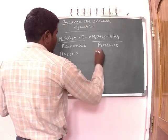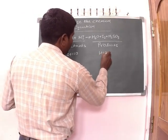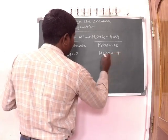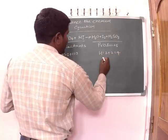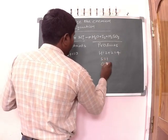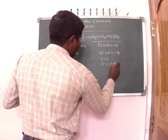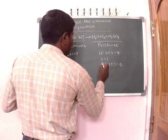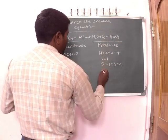And in the products side, the number of hydrogen atoms is 2 plus 2, that equals to 4. The number of sulfur atoms is 1. The number of oxygen atoms is 1 plus 3, that equals to 4. The number of iodine atoms is 2.